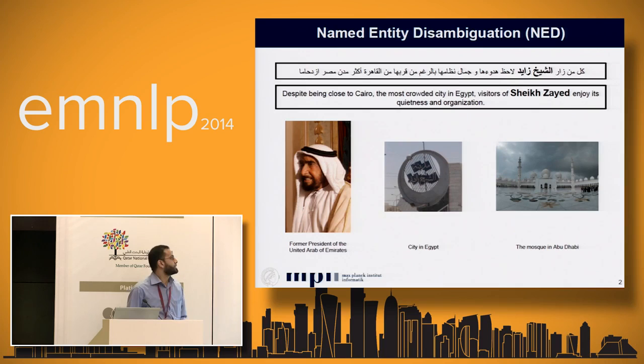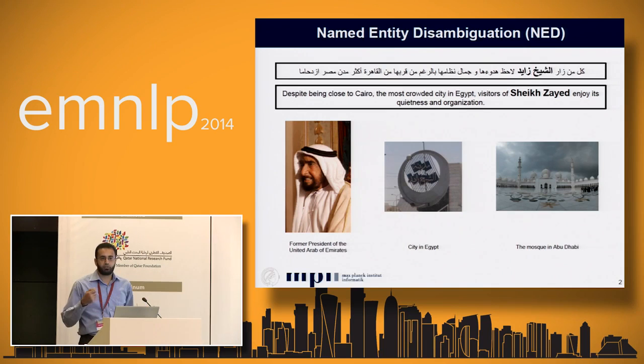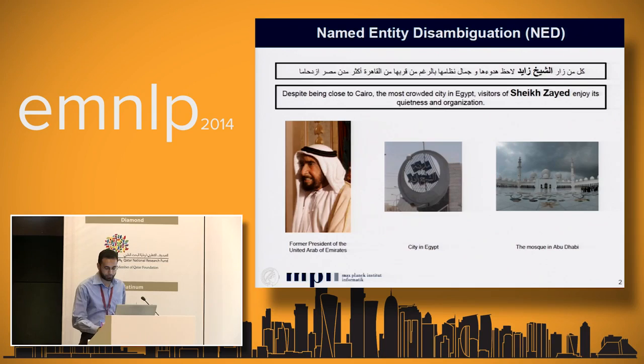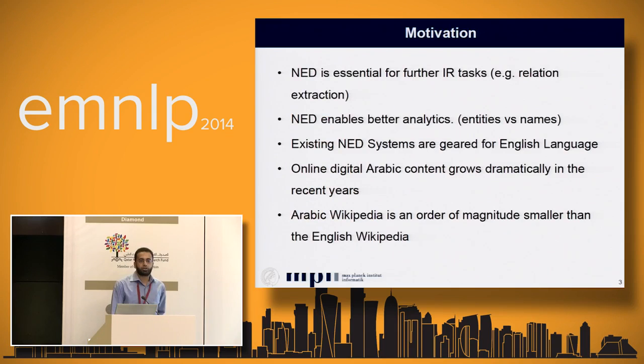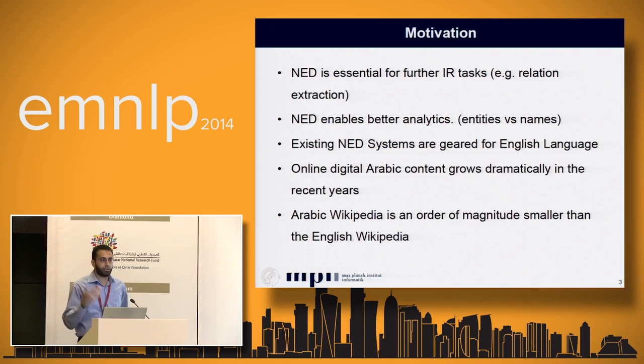The noun Sheikh Zayed can refer to multiple entities: for example, it can refer to the former president of the Arab Emirates, the city in Egypt, or the famous mosque in Abu Dhabi. The problem of Named Entity Disambiguation (NED) is basically finding the correct mapping — the entity intended by the writer. This is important because NED is essential for many IR tasks like relation extraction, enriching knowledge bases, and powering systems like Apple Siri and Google Voice Assistant. It also gives better analytics because we have statistics about entities, not just names.